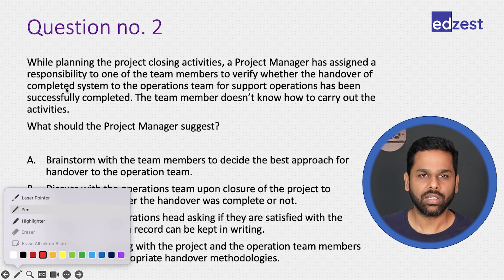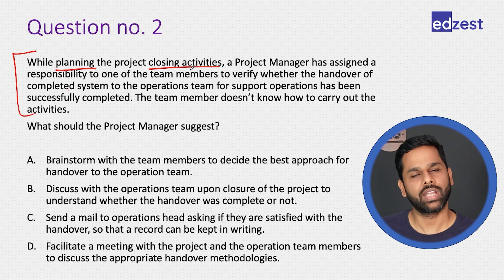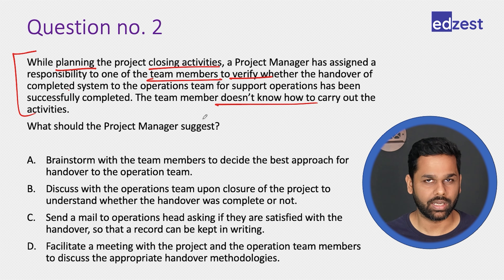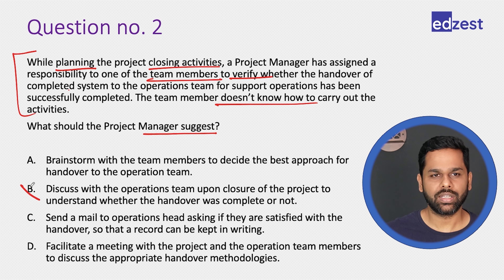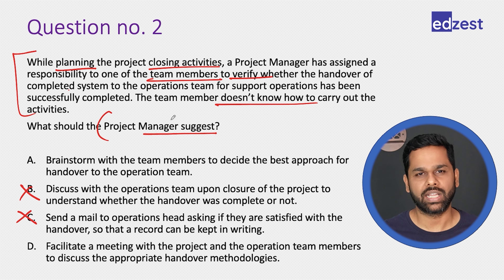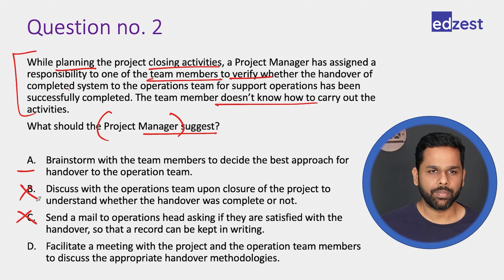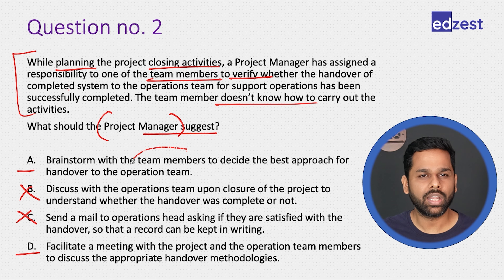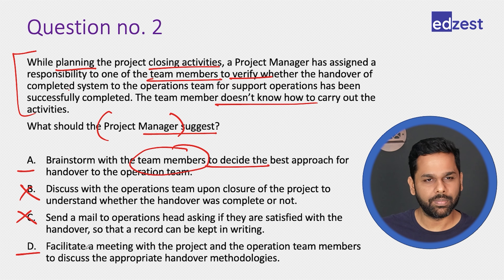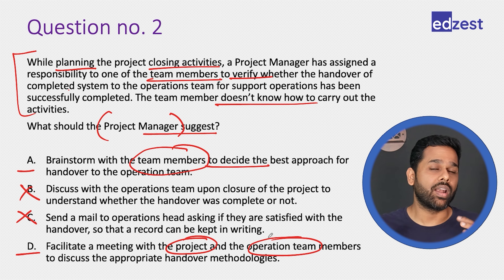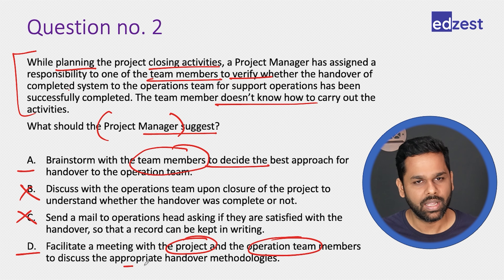In 90% of exam situations, the option involving brainstorming, discussion, and collective decision-making is the best choice. If you also see an option that includes the relevant external parties — operations team, stakeholders, vendors — alongside your team, that is always better. Summary of this question: B and C were direct solutions, which a servant leader should not provide. A and D both would help, but D called the relevant people for discussion — operations team included — which is always better.